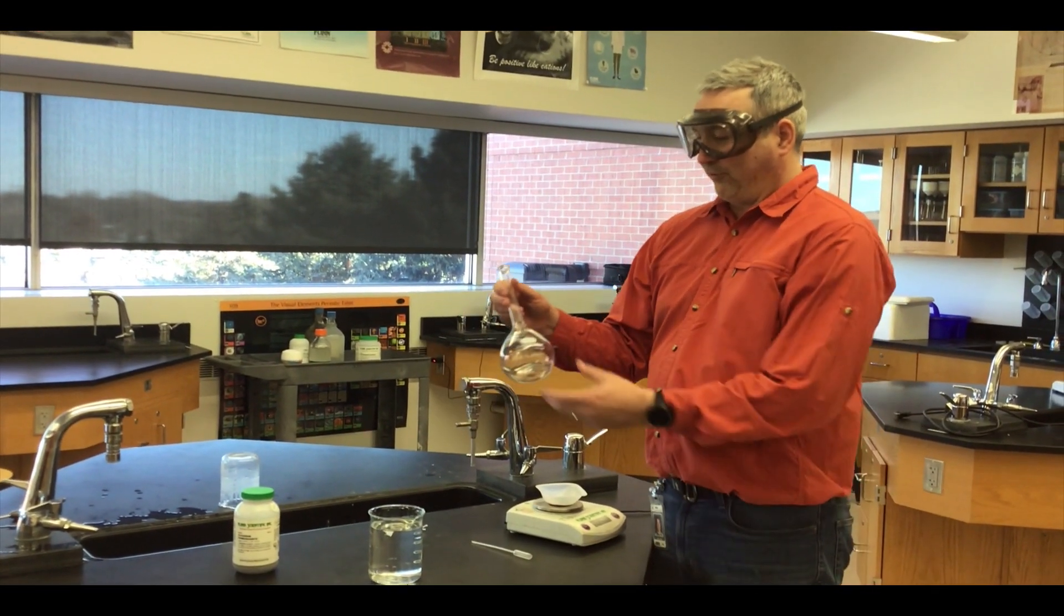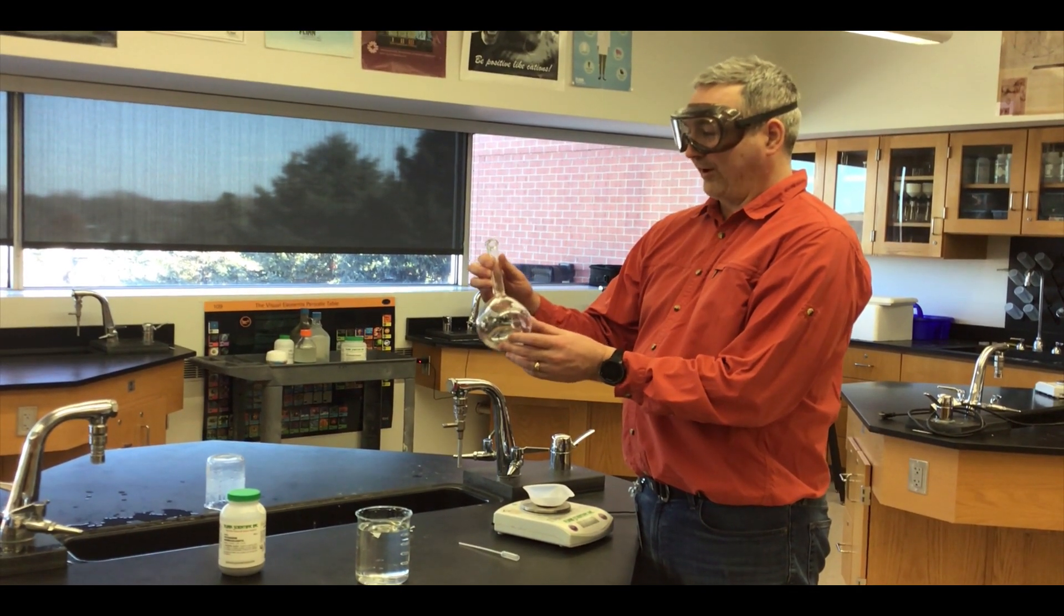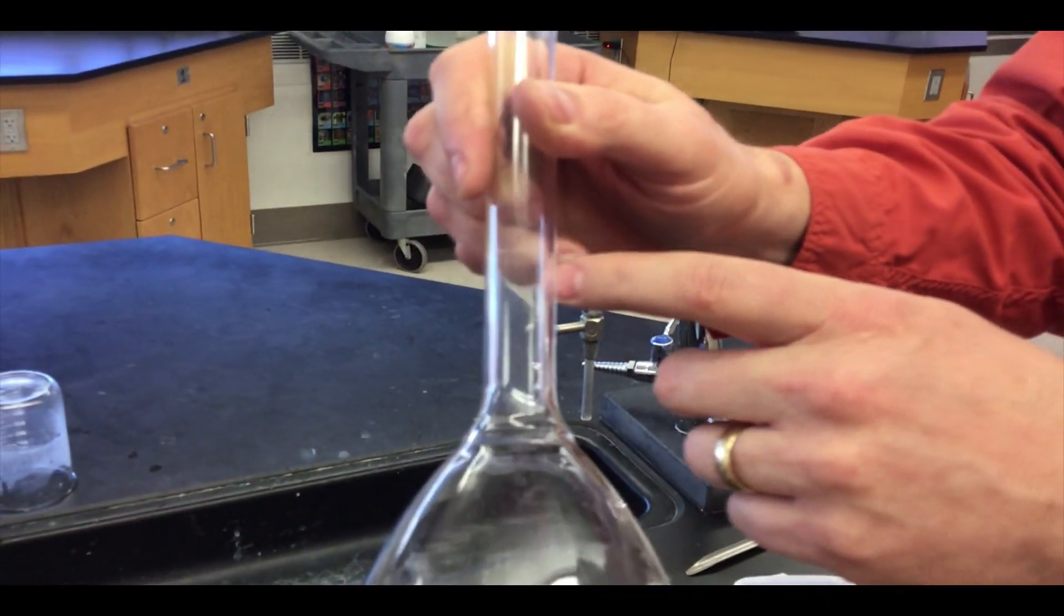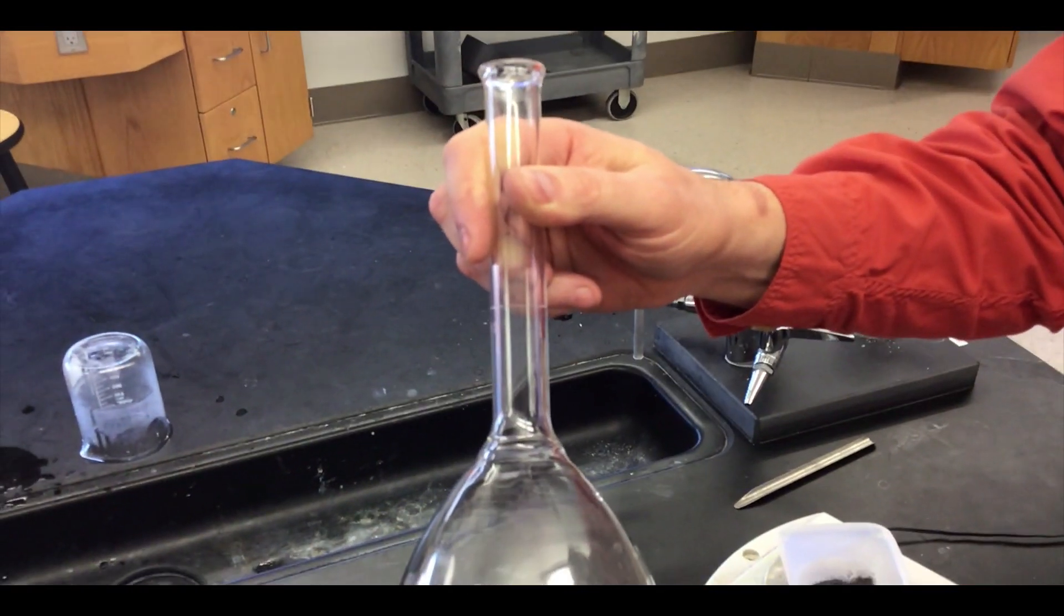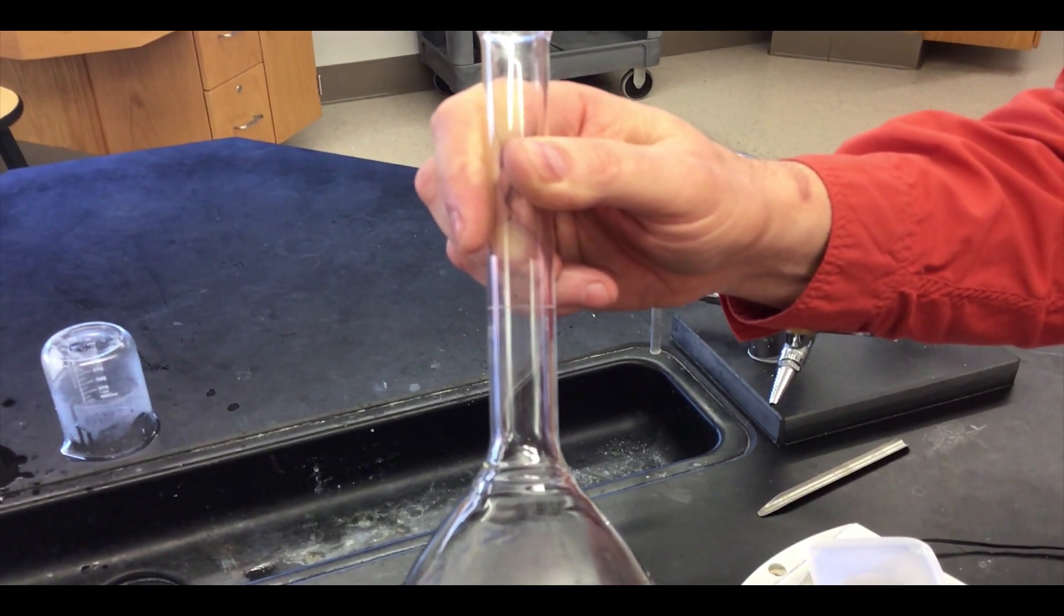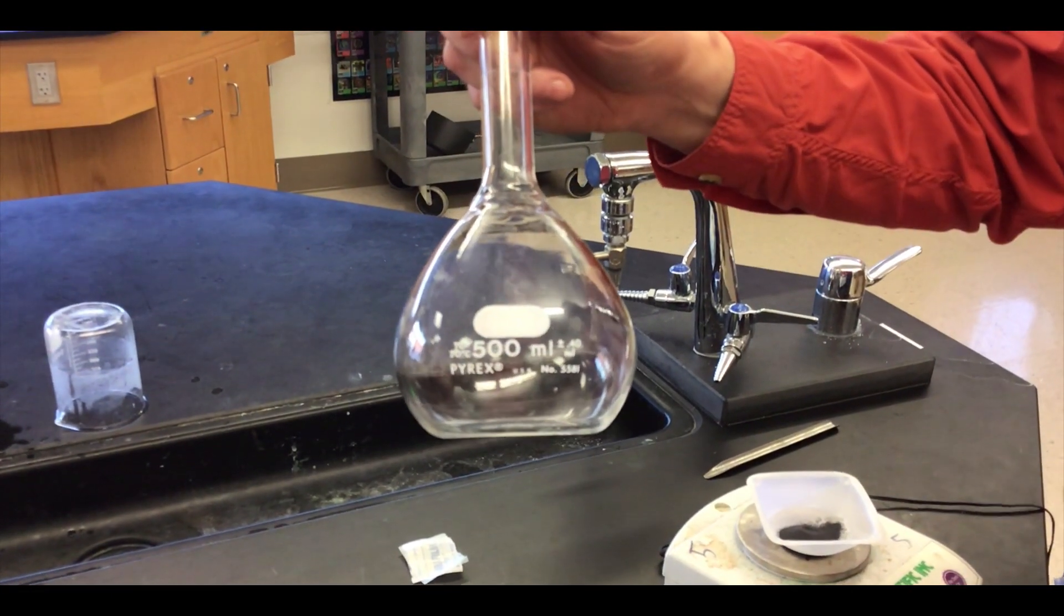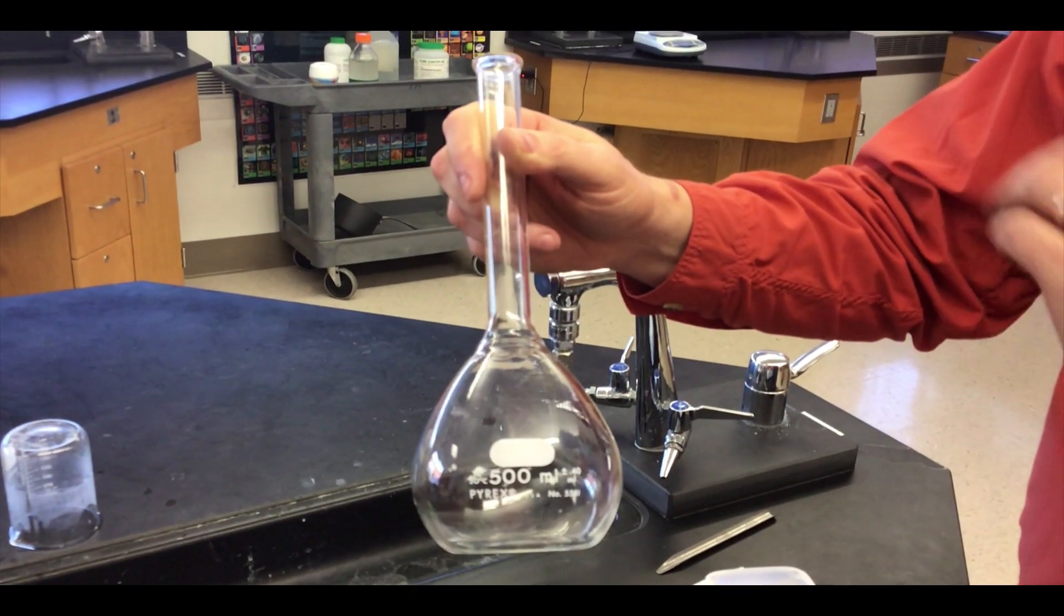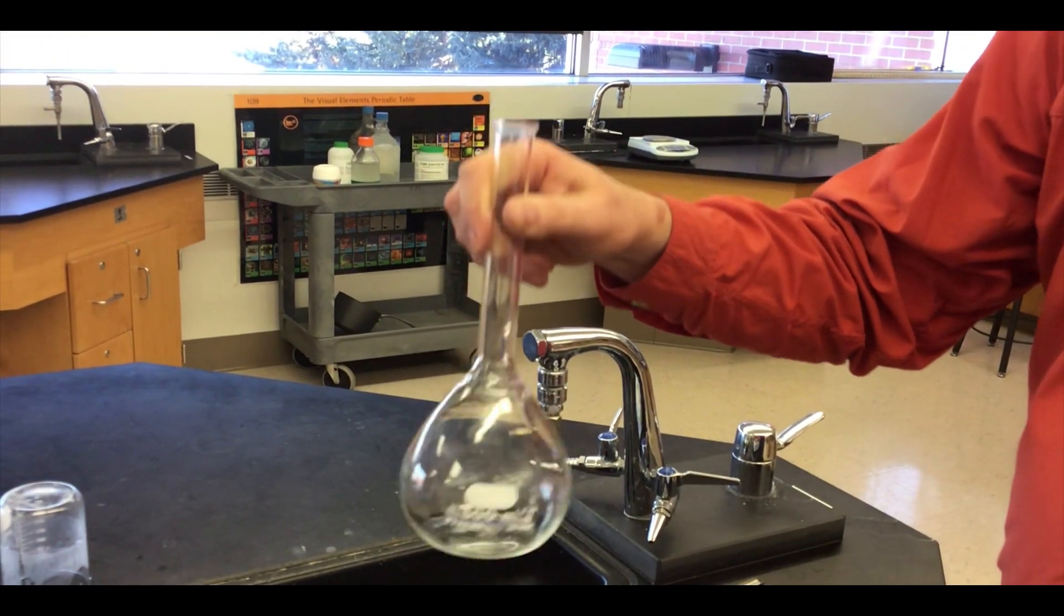We use a volumetric flask because they are easy to find the correct volume at. Right on the neck here if you zoom in we have a scratch mark that has gone all the way around the neck. They make this glassware and then they specifically fill it up with a very fixed amount of solution or water and then they scratch it off where it's right. So the scratch might be a little bit higher up on some or a little bit lower on some, but it's very specifically 500 milliliters and it's a narrow neck so we can swirl it around when we want to mix.